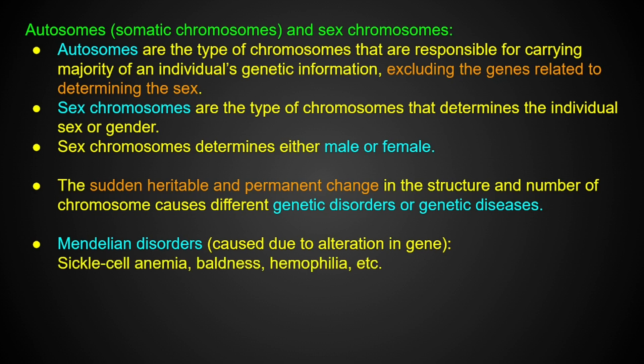This is sickle cell anemia. This shows the blood RBC. The normal RBC structure is biconcave. In sickle cell anemia, the RBC takes on a crescent moon shape — like a sickle — instead of the normal biconcave shape.